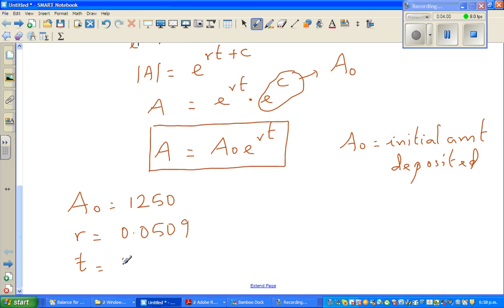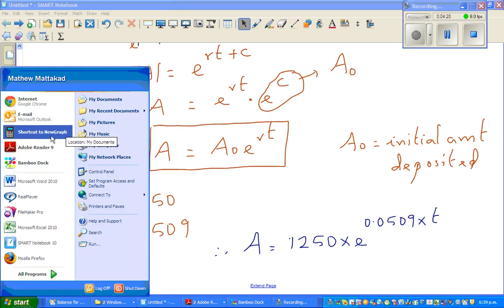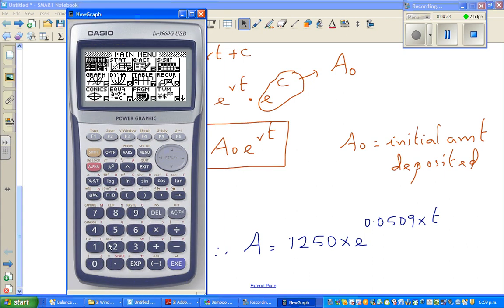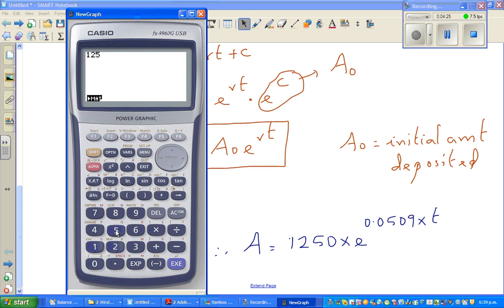Therefore, A = 1250 × e^(0.0509 × t). Let me use my calculator: 1250 × e^(0.0509 × 5) = 1612.3 dollars, rounding to one decimal place.